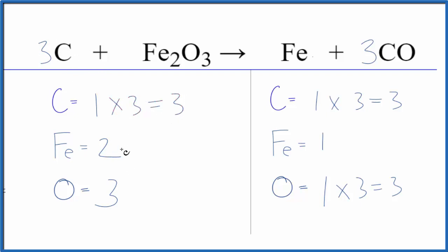And then for the iron, we have two here and one here. We'll just put a two in front of the Fe. One times two and we're done. This equation is balanced. So the trick when you have atoms by themselves, like we had Fe by itself or carbon by itself, leave those till last.